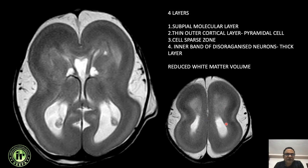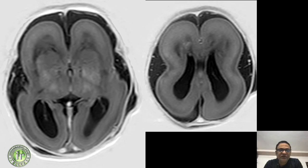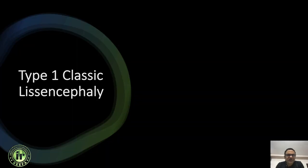The periventricular white matter contains water, as is normal in a newborn baby, with slight ventriculomegaly. The myelination process is proceeding normally. In the upper sections you can additionally see a T1 hyperintensity in the frontal region, which we will discuss later.